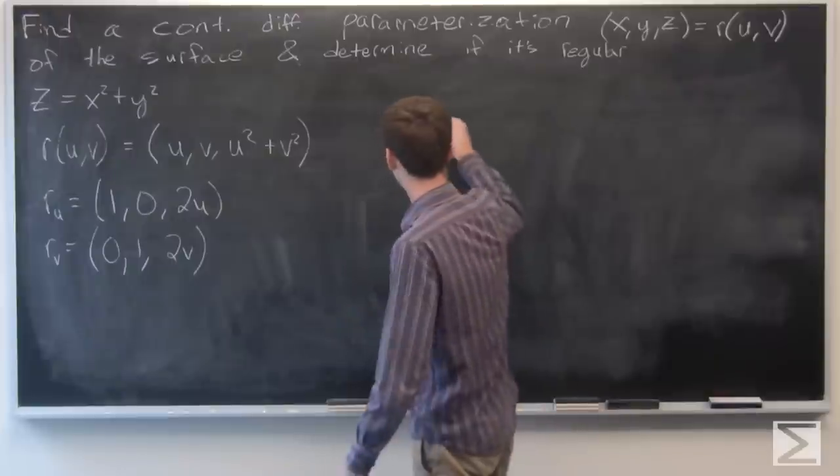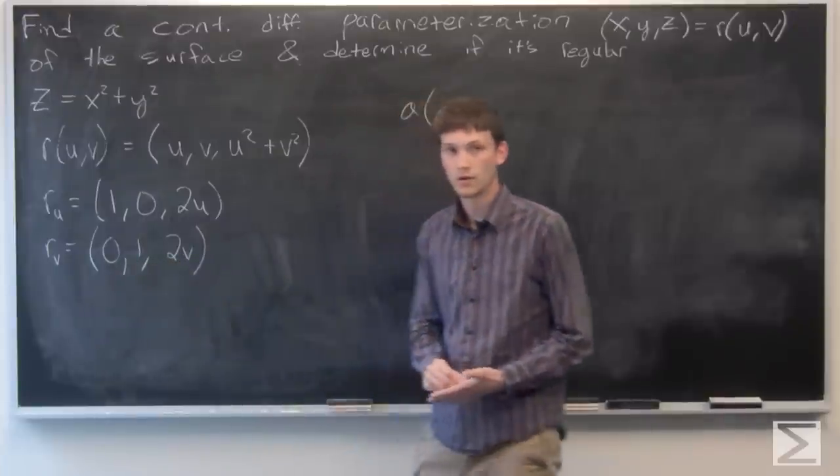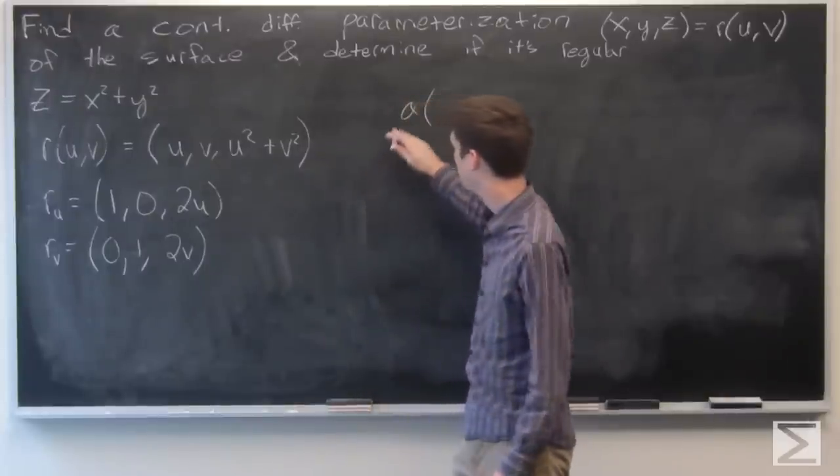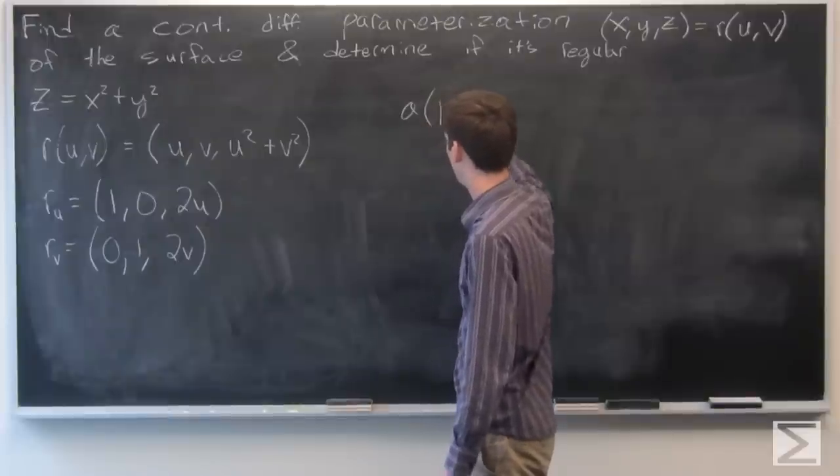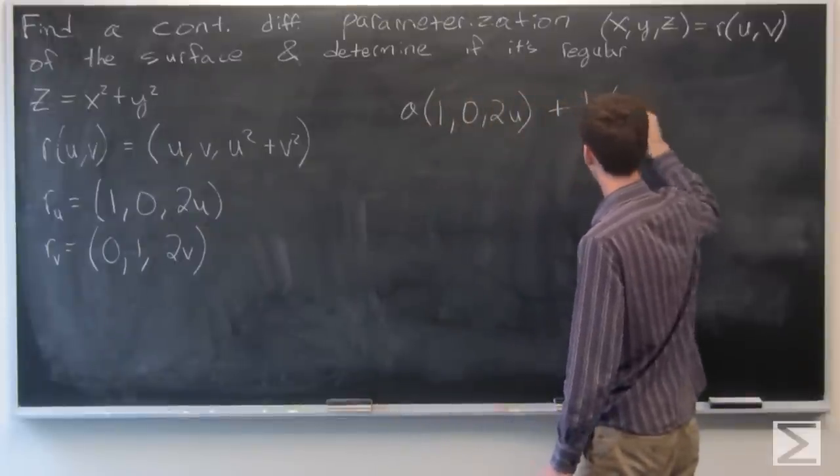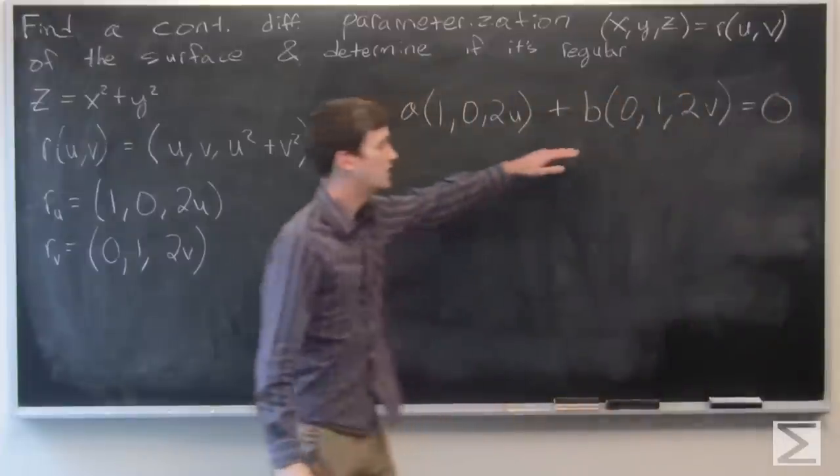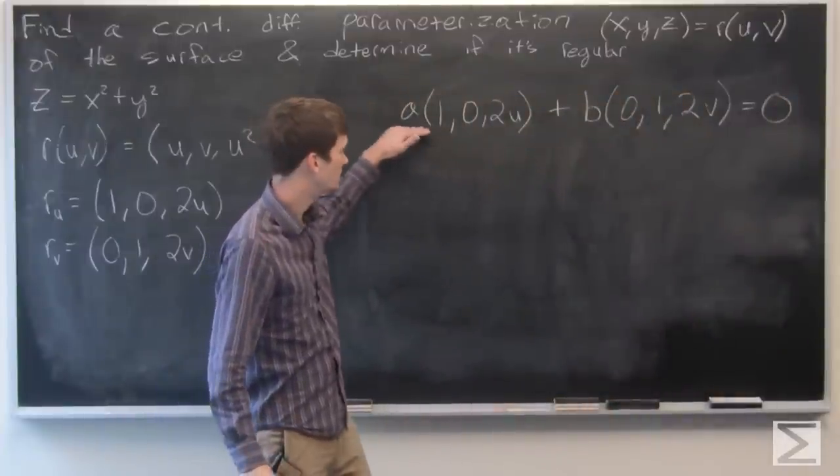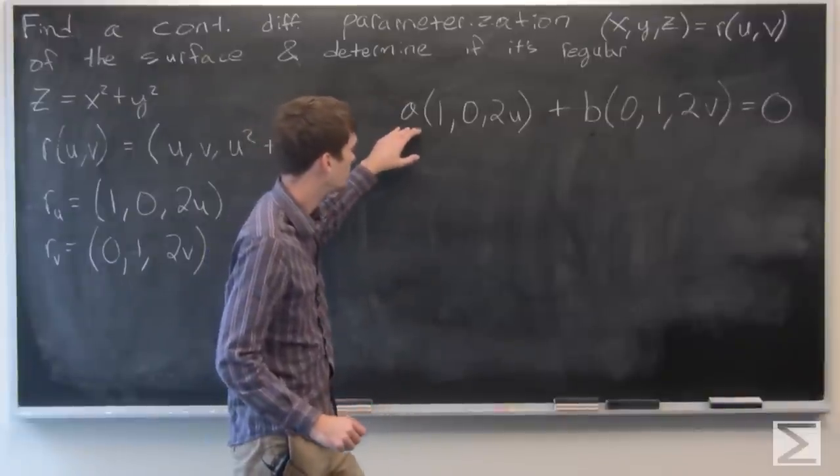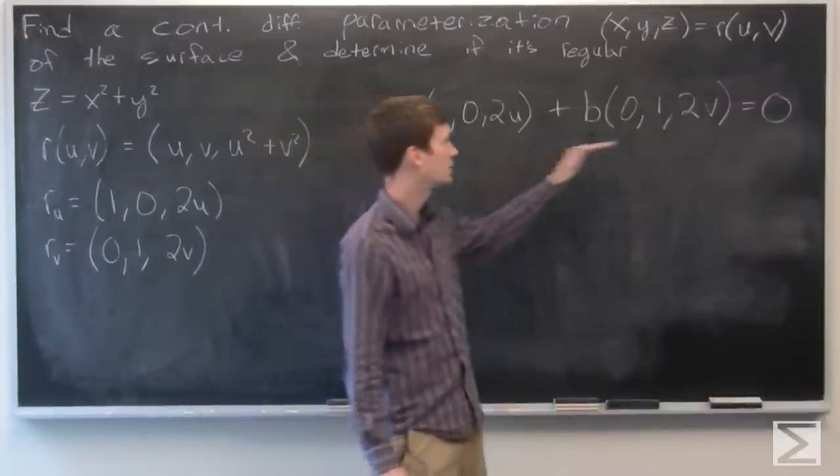So now we want to find...so if r is regular, then that means that the only terms a and b such that this statement is true is when a is equal to 0 and b is equal to 0. So we want to see if we can find some terms a and b such that they're not both 0 and this equation is satisfied.